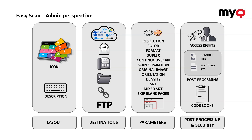The last thing the admin has to set are the access rights, so who should be able to see what. There's also an option to set post-processing, which means that if you would like to connect it to some third-party software where you need metadata files, the system can generate them either automatically or based on selections done by the user. The last option here are the codebooks, through which you can define a dialog, a list of options, or a picklist from which the user has to select something and either affect the metadata file or the target destination.